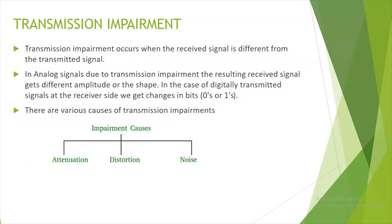Moving on to the next topic: transmission impairment. Transmission impairment occurs when the received signal is different from the transmitted signal. In analog signals, the received signal may get a different amplitude or shape. In digital signals, bits may be changed to 0 or 1 at the receiver side. The causes are three types: attenuation, distortion, and noise.